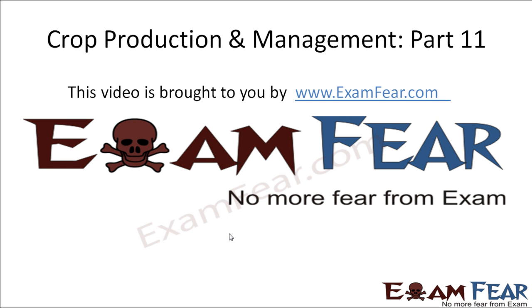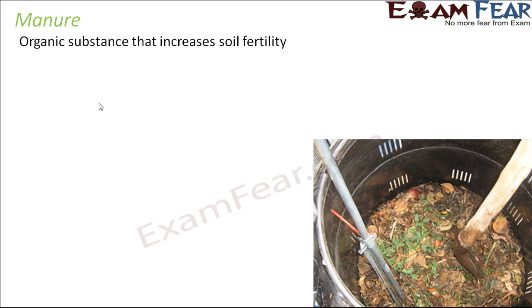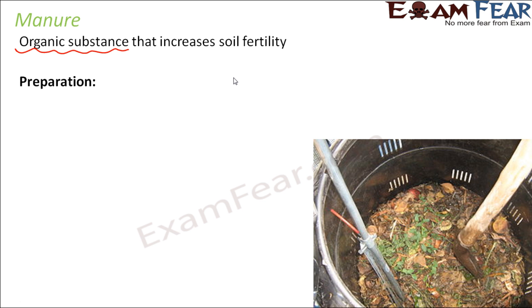This video on crop production and management part 11 is brought to you by examfear.com. Let us see what manure is and how exactly it is prepared. Manure is an organic substance that increases soil fertility. Organic substance means any carbon-containing substance. Let us quickly see how manure is prepared.